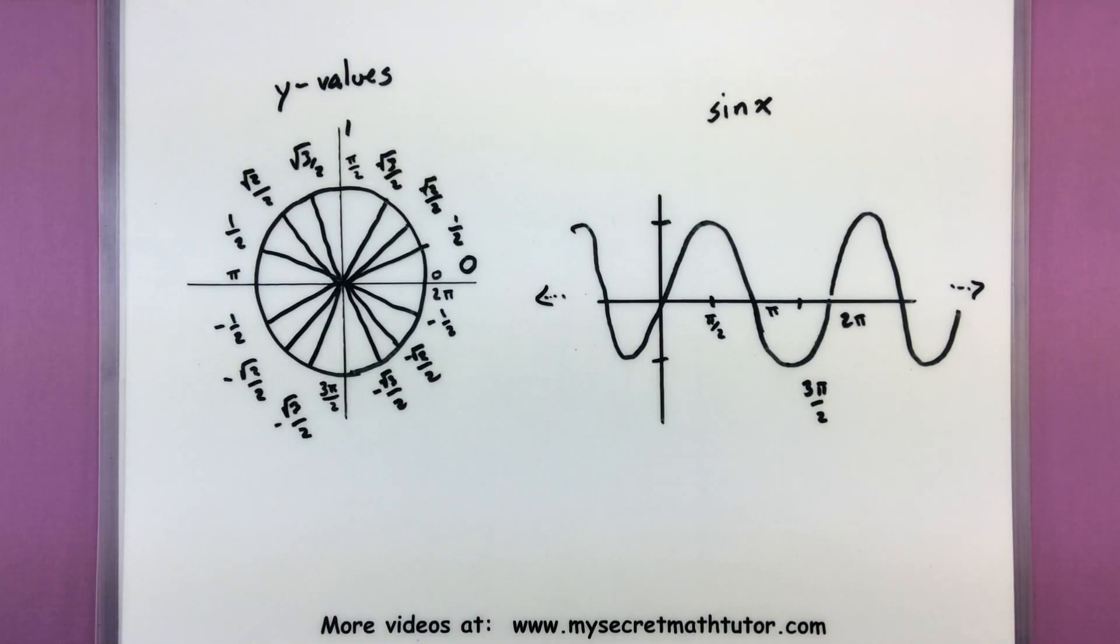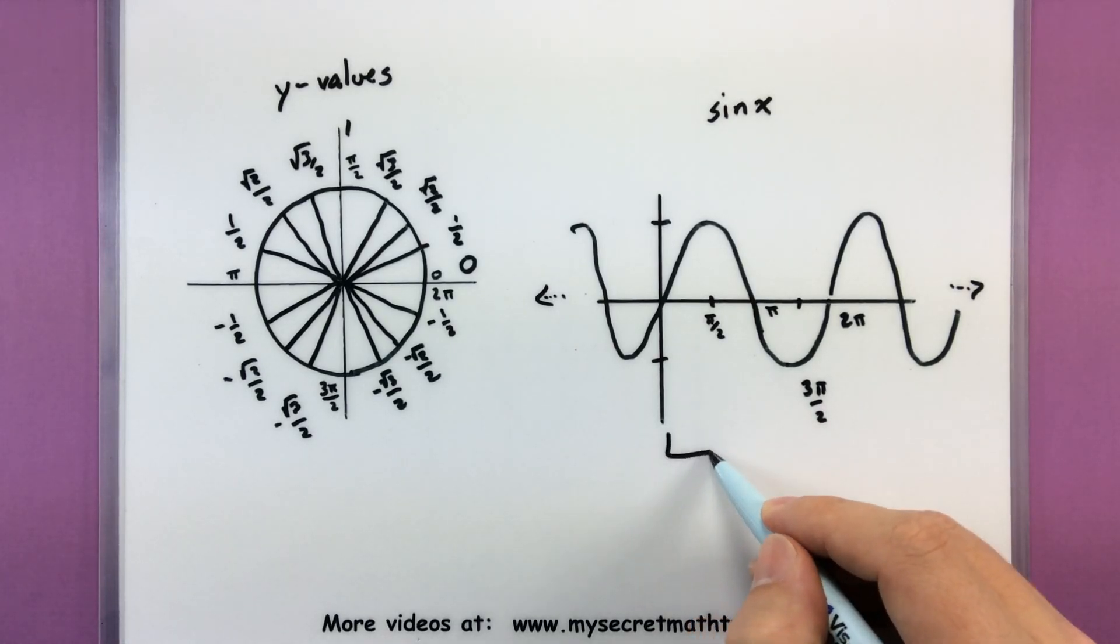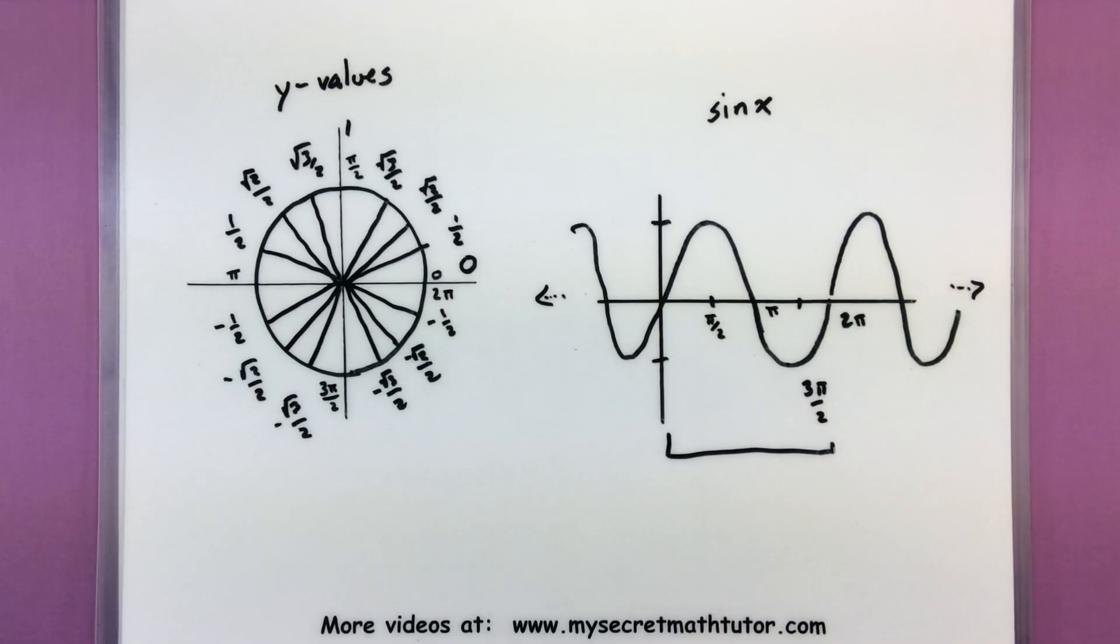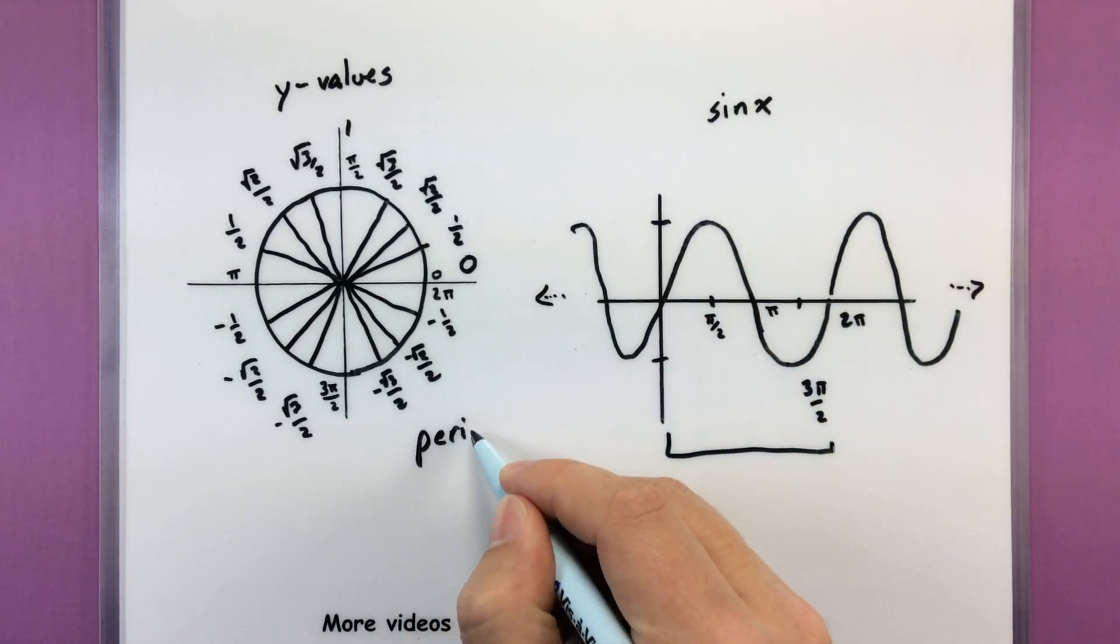And again, the same thing would happen for cosine, but now we keep track of the x values. Alright, some other things you may want to know about sine. This repeated section right here, where it makes one full cycle, this is what we call the period of the function.